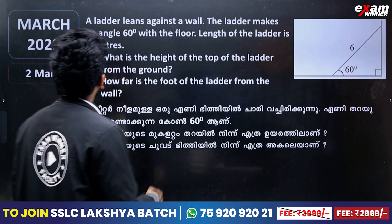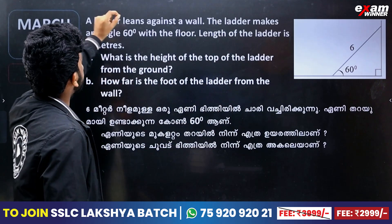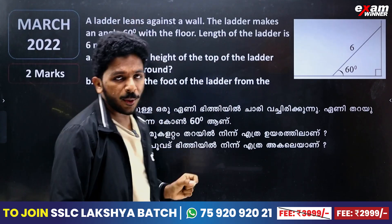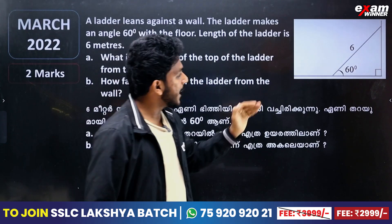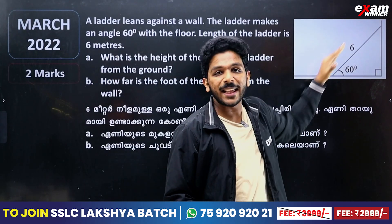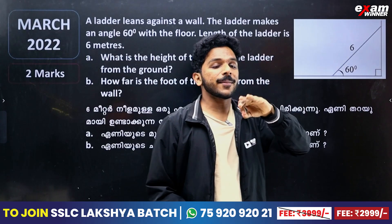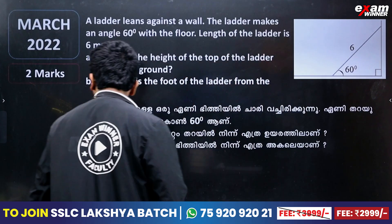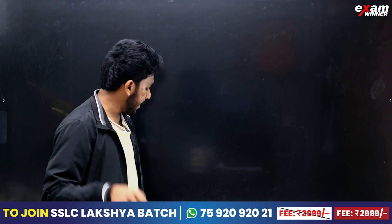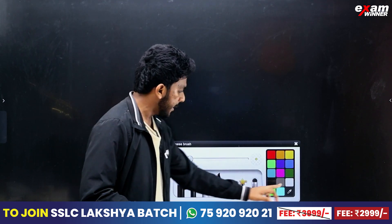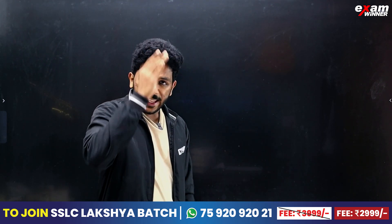If you want to lean against the wall, if you want to draw a ladder — if you want to draw a ladder in mathematics, you have to draw it following the rule for trigonometry. Let's say the ladder is 38 cm.